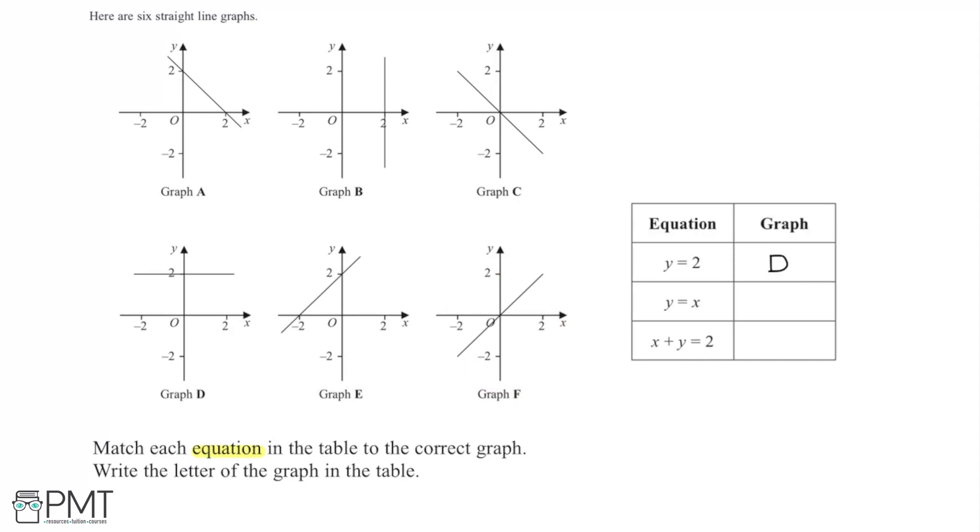We can see that for the line in Graph F, it is true that the x and y values are always equal. For example, when x is 2, y is also 2 for this point on the line. However, for Graph C, when x is -2, y is positive 2, so this is not the same. Therefore, y = x is Graph F.